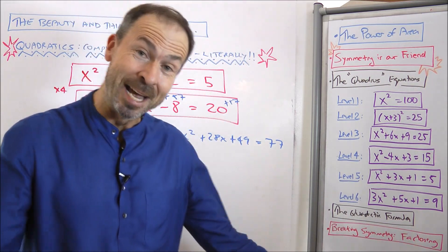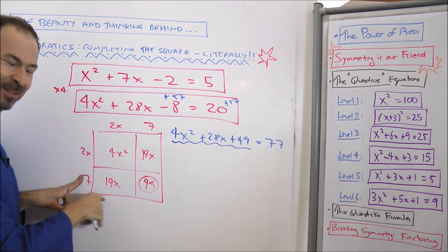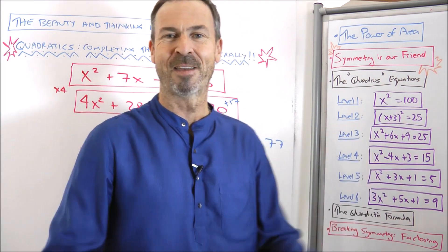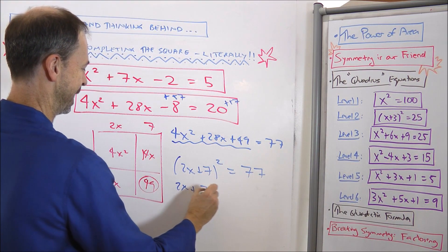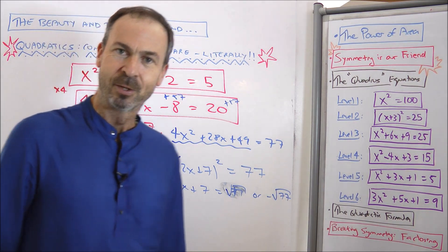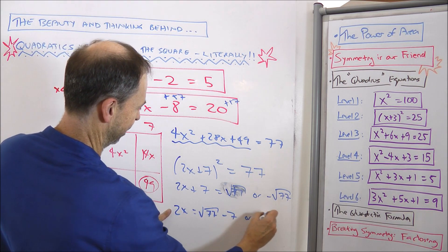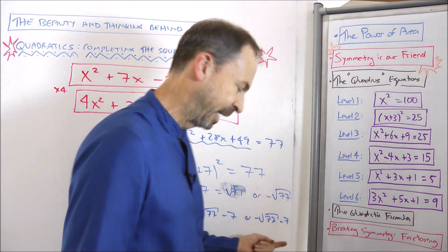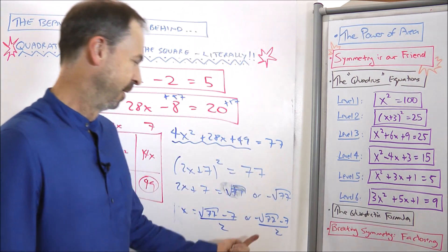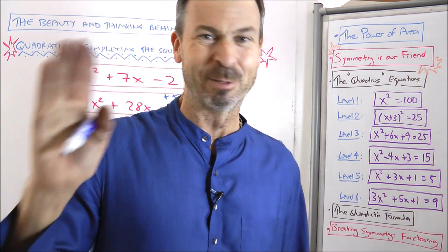77 is an awkward number, but so be it. But this part is nice — that's my square. It's really a 2x plus 7 by 2x plus 7 square. 2x plus 7 squared is 77. Numbers aren't nice, but I'll push through nonetheless. Something squared is 77, so my something is root 77 or negative root 77. Subtract 7 from everything, so 2x is root 77 minus 7, or negative root 77 minus 7. Divide by 2: x is either root 77 minus 7, all divided by 2, or negative root 77 minus 7, all divided by 2. Not very friendly answers in the end, but the actual process was fine — completing the square literally was lovely.